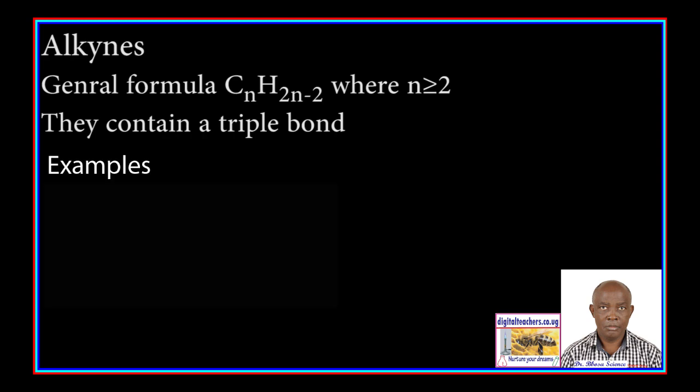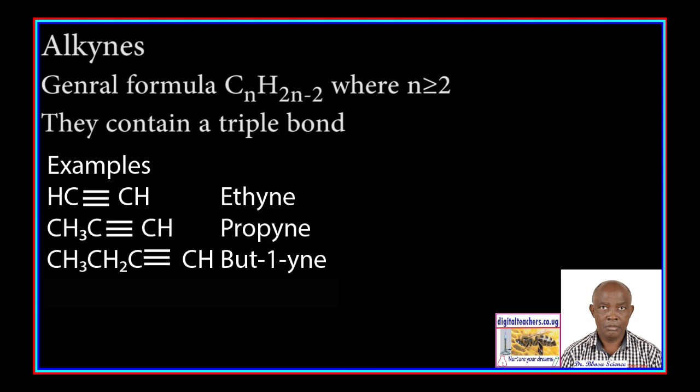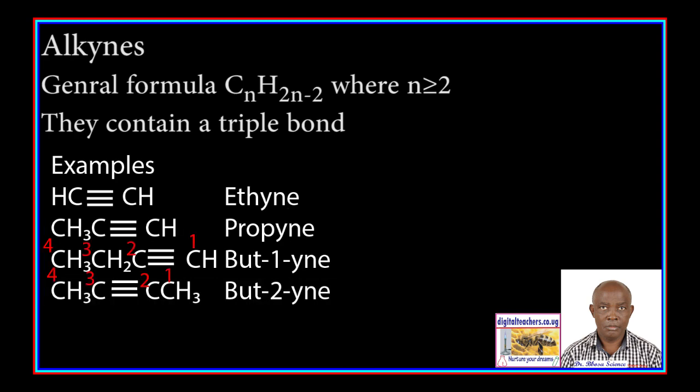Examples: we have ethyne, propyne, but-1-yne, and but-2-yne. We number the carbon atoms from the side nearest a triple bond.